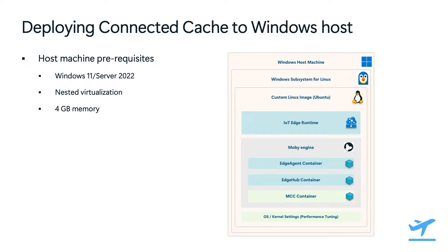If you're deploying Connected Cache to a Windows host, the host machine prerequisites are using either Windows 11 or Windows Server 2022, you've enabled nested virtualization and installed Windows Subsystem for Linux, and you have at least four gigabytes of free memory. In the diagram, you have your Windows host machine on the outermost box, with Windows Subsystem for Linux installed, and then using the deployment scripts, a custom Linux image, Ubuntu 22.04, will be deployed to your host machine. Alongside it will be the IoT Edge runtime, the Moby engine, Edge agent container, Edge hub container, and the Connected Cache container. Custom OS and kernel settings will also be configured on the custom Ubuntu image to optimize your host machine for Connected Cache performance.